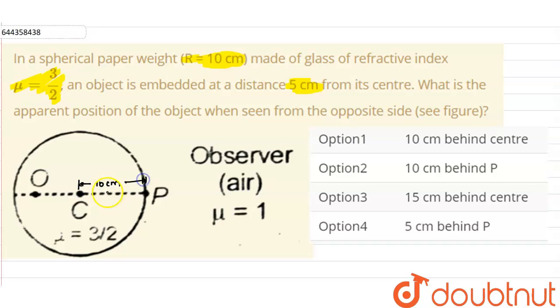So this is our 10 cm having a refractive index of 3/2. Now, an object is embedded at a distance of 5 cm. So this distance is 5 cm.